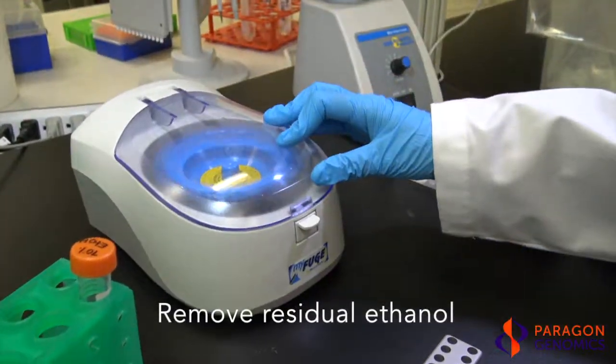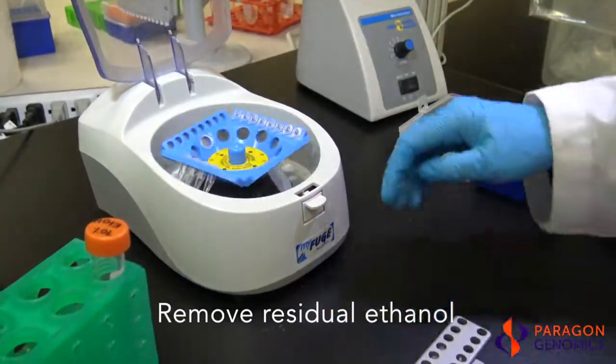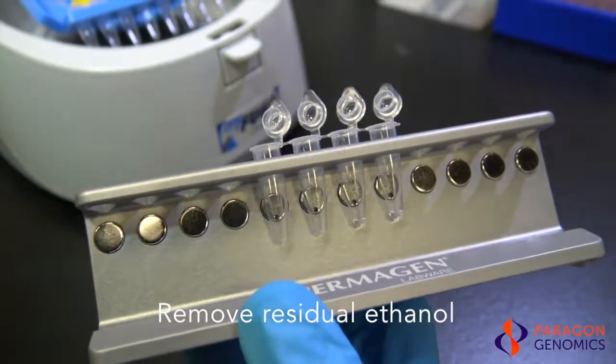After the second wash, briefly spin down the tubes to collect any residual ethanol and then place the tubes back onto the magnetic rack. Remove any remaining ethanol using a 10 µL pipette tip.